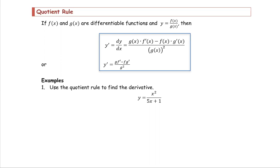Let's look at the quotient rule. If functions f and g are differentiable and y is in the form of f divided by g, then the derivative y prime or dy/dx equals g multiplied by the derivative of f, subtracted by f multiplied by the derivative of g, all divided by g squared.